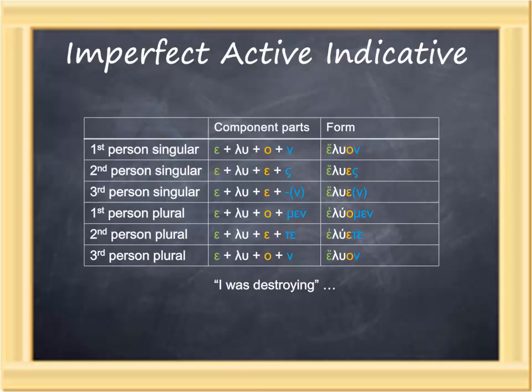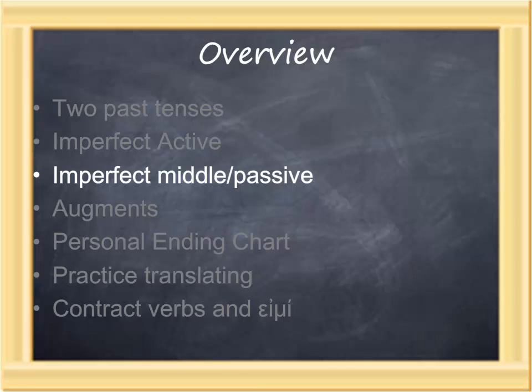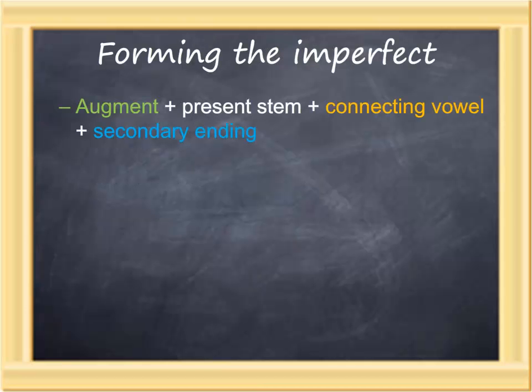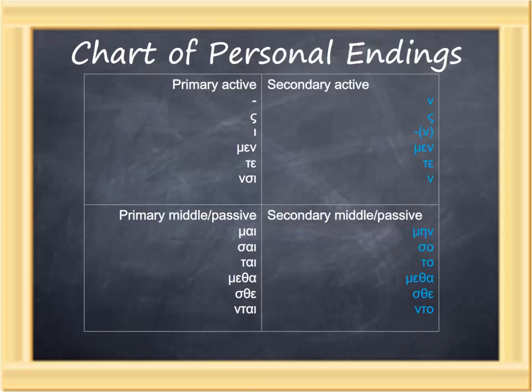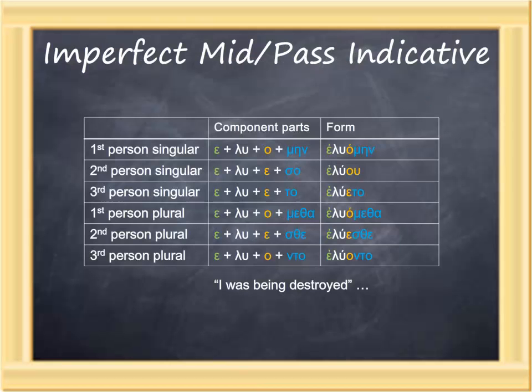As you might guess, the imperfect middle passive is formed similarly—it just uses a different set of personal endings. Again, the forming of the imperfect is: augment, present stem, connecting vowel, and secondary ending. But with the imperfect middle passive, we are concerned about secondary middle passive endings. Those endings are: mēn, so, to, metha, sthe, and nto.